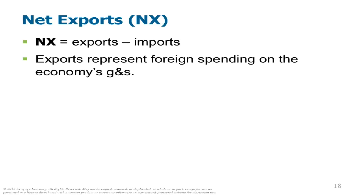If we're talking about Canadian GDP, then net exports represents U.S., British, and Mexican spending in Canada's economy. We're talking about American GDP — we're talking about Mexican, Canadian, Chinese, Japanese, and European spending in the American economy. When you purchase a shirt made in China, you are increasing China's GDP. Is it possible for this figure to be negative? Oh, yes. Yes, it is.